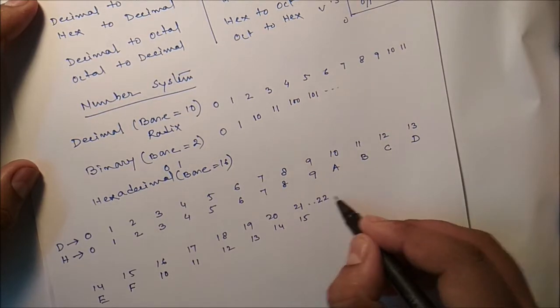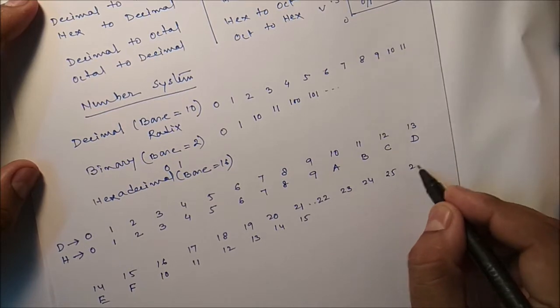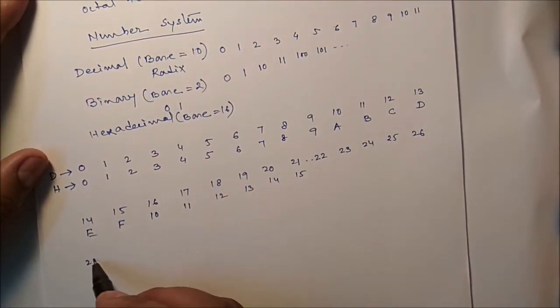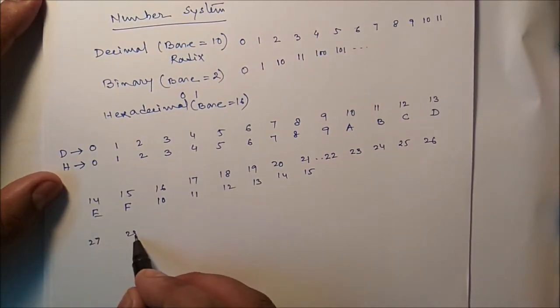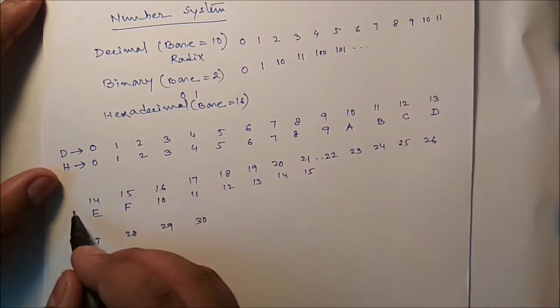So we can continue this one. 22, 23, 24, 25, 26. Then 27, 28, 29, 30. So this is the decimal part. This is the hexadecimal part.